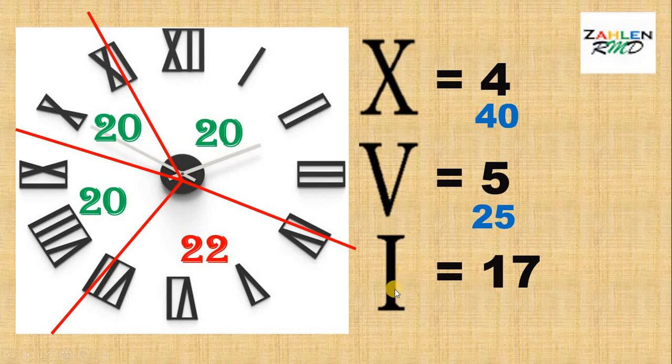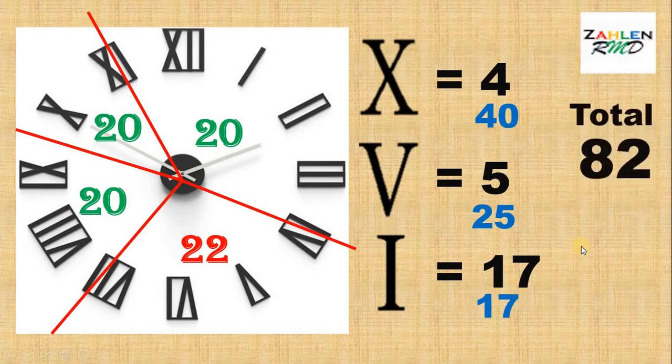Lastly, the value of I is simply 1. Therefore, the value of these 17 I's is simply 17. Now, when we get the total of 40, 25, and 17, we get a total of 82.